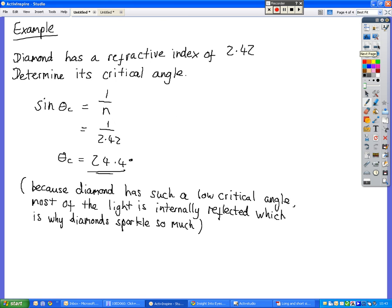So we looked at an example of that. Diamond has a refractive index of 2.42. Determine its critical angle. So sine of the critical angle is equal to 1 over refractive index, 1 over 2.42, which gives 24.4, which is a very, very small critical angle, which is really the reason that diamonds sparkle so much.